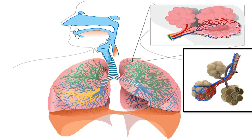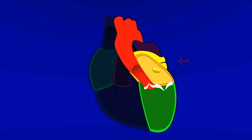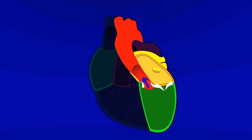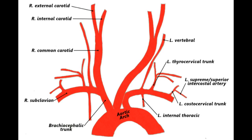Blood gets oxygen from the lungs — we discussed this process in an earlier lesson. Now it is oxygenated blood. It returns to the left atrium. The left atrium pumps this blood into the left ventricle, then the left ventricle pumps the oxygenated blood into an artery called the aorta. Many arteries come out of this aorta like branches, and those arteries carry oxygenated blood to different organs of the body.